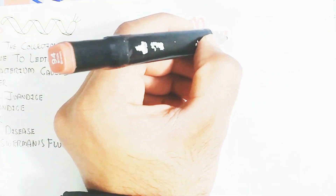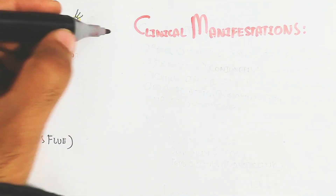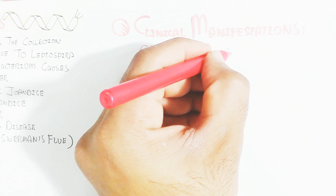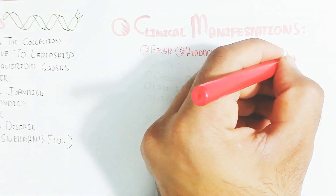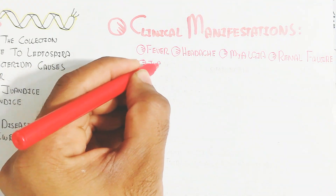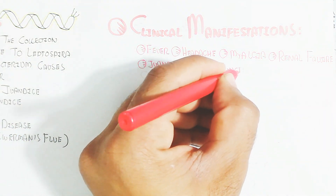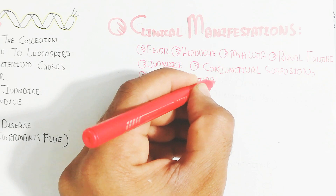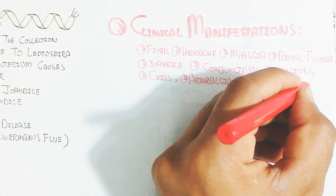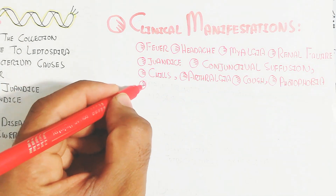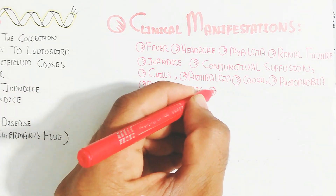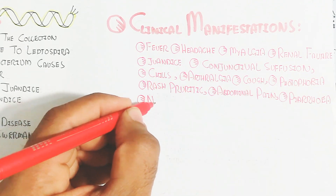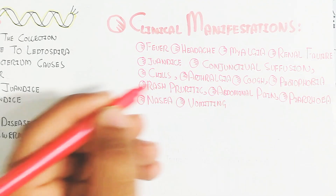The clinical manifestations of leptospirosis include fever — which is an identifier for the disease — headache, myalgia, renal failure, jaundice, conjunctival suffusion, chills, arthralgia, cough, photophobia, rash, pruritus, abdominal pain, diarrhea, nausea, and vomiting.